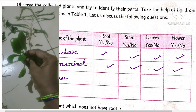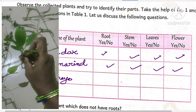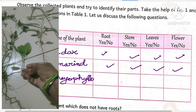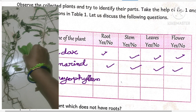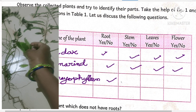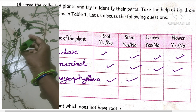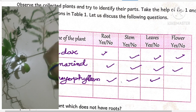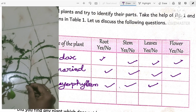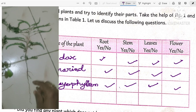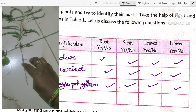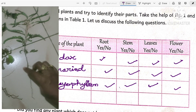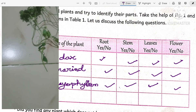The next one is bryophyllum, called 'ranapala' in Telugu. It can reproduce through its leaves. Does it contain roots? Yes. Does it contain stem? Yes. Does it contain leaves? Yes. Does it contain flowers? It does not have flowers here, but generally bryophyllum plants do have flowers.